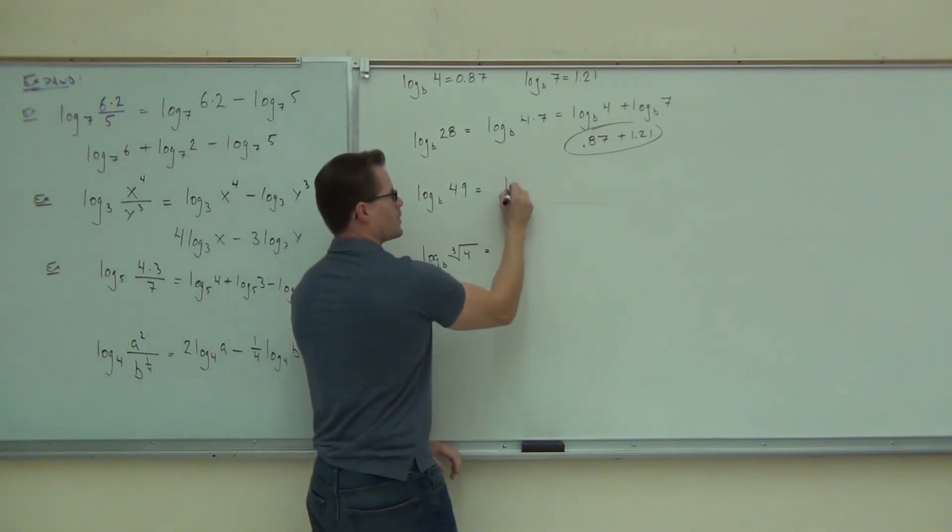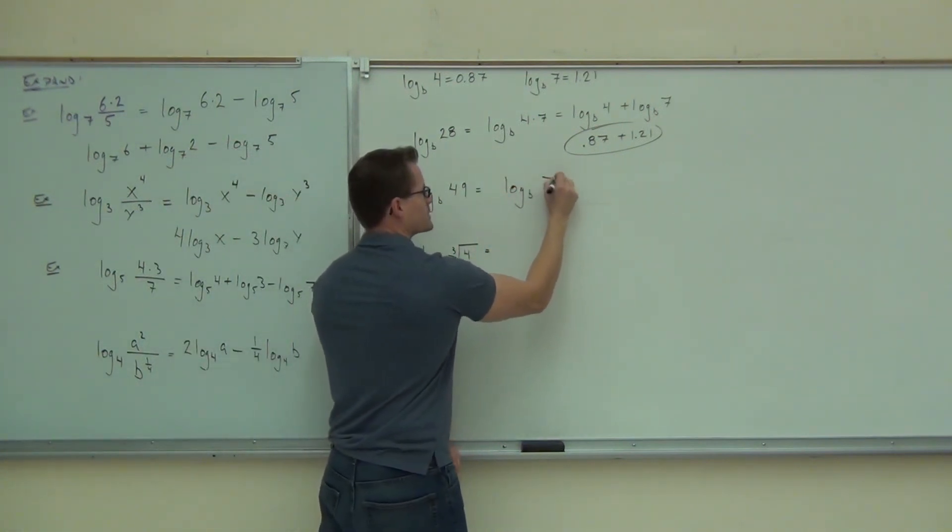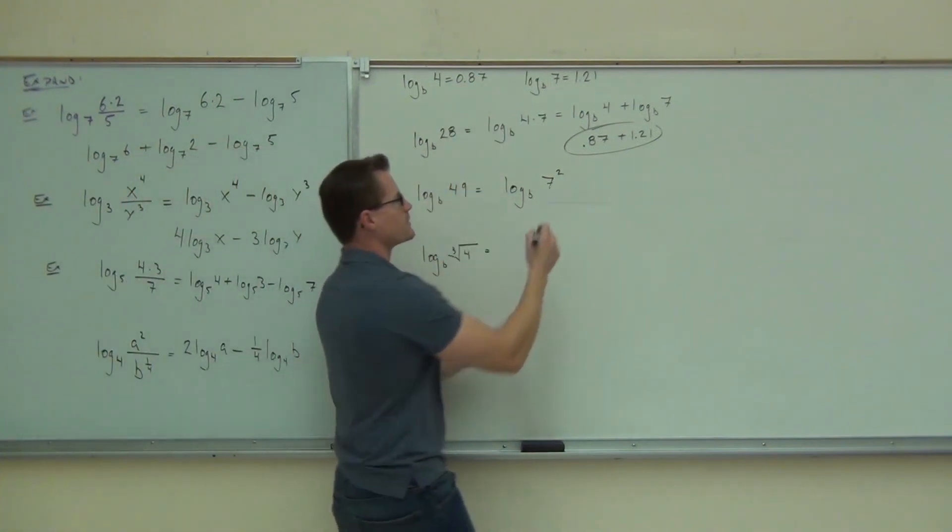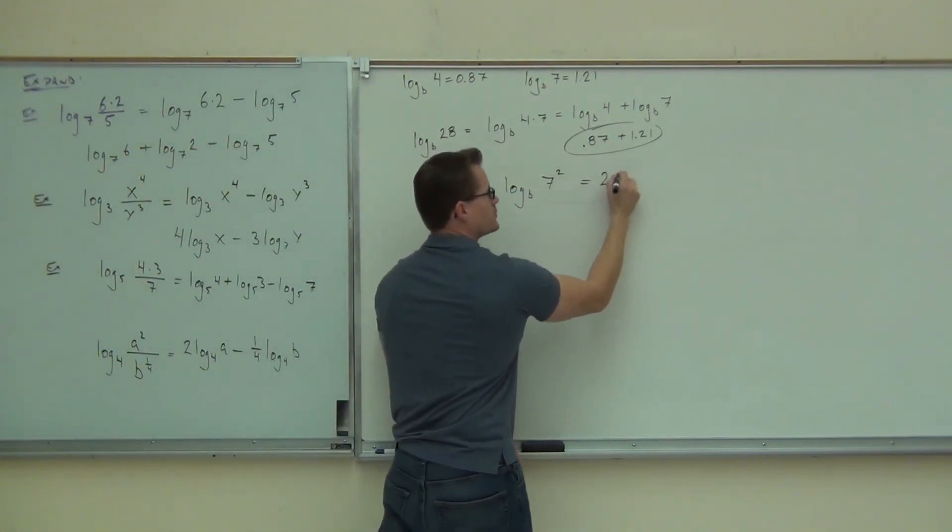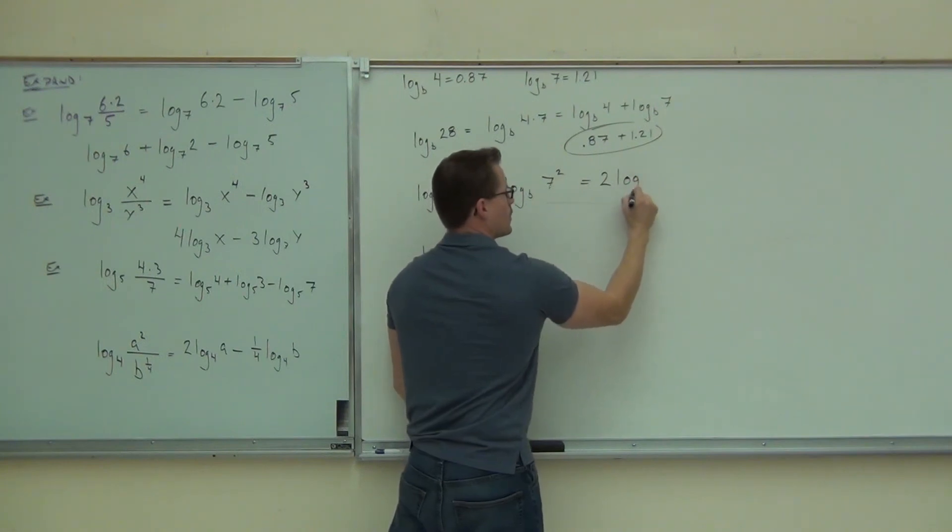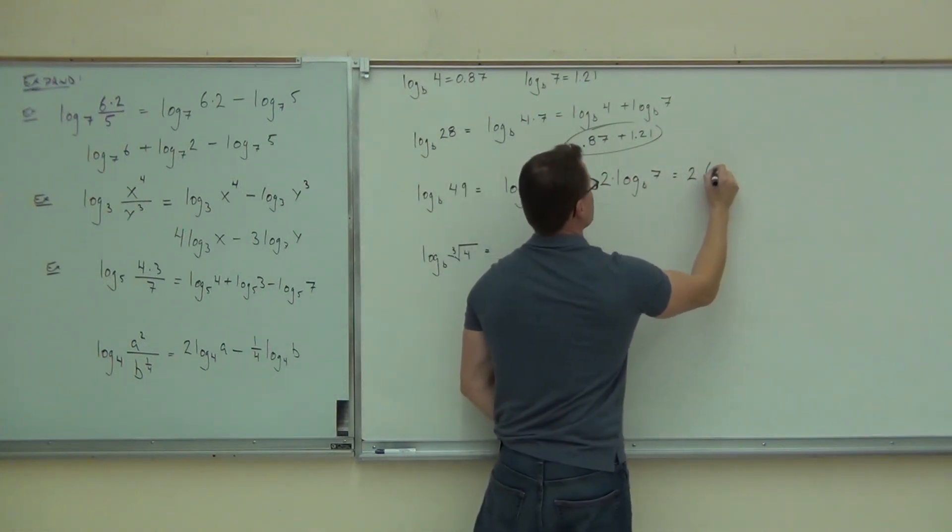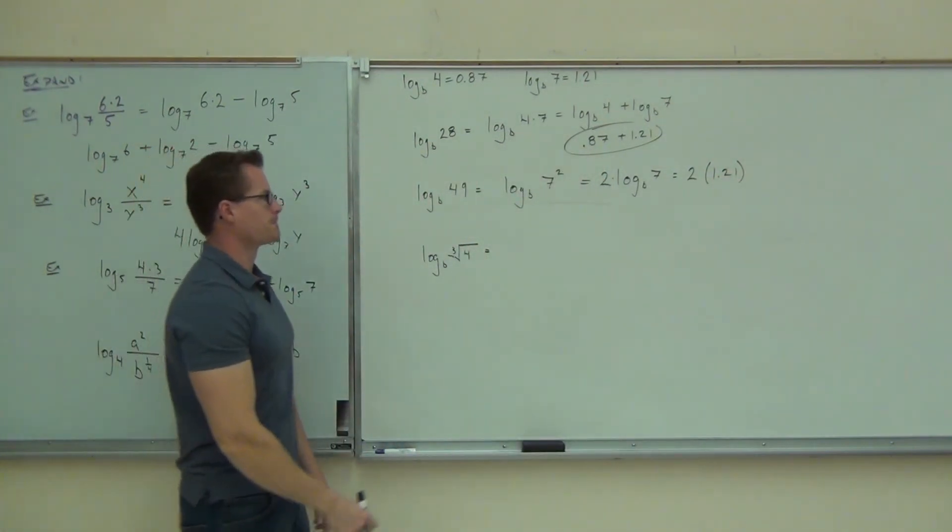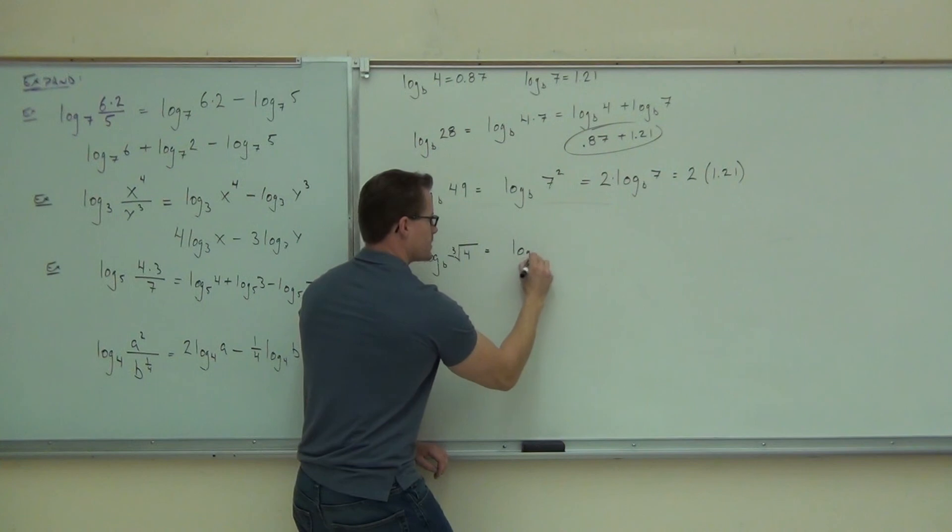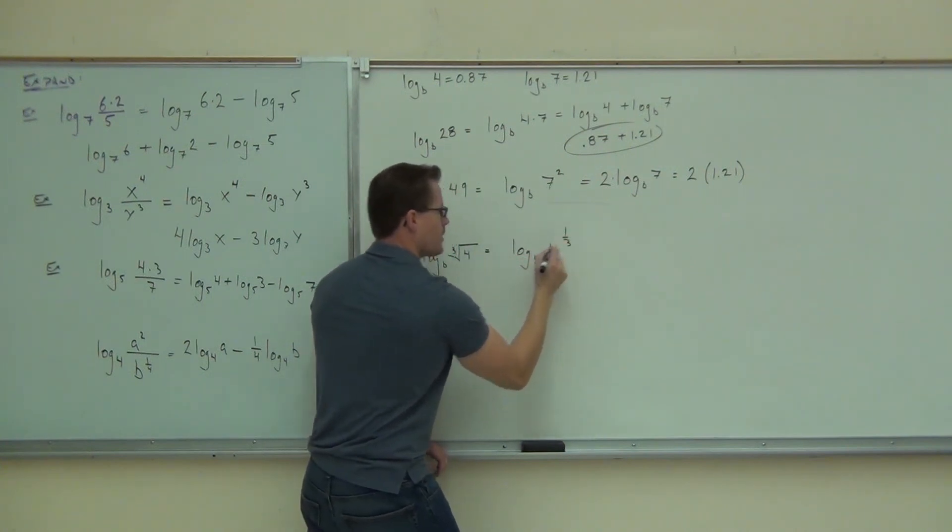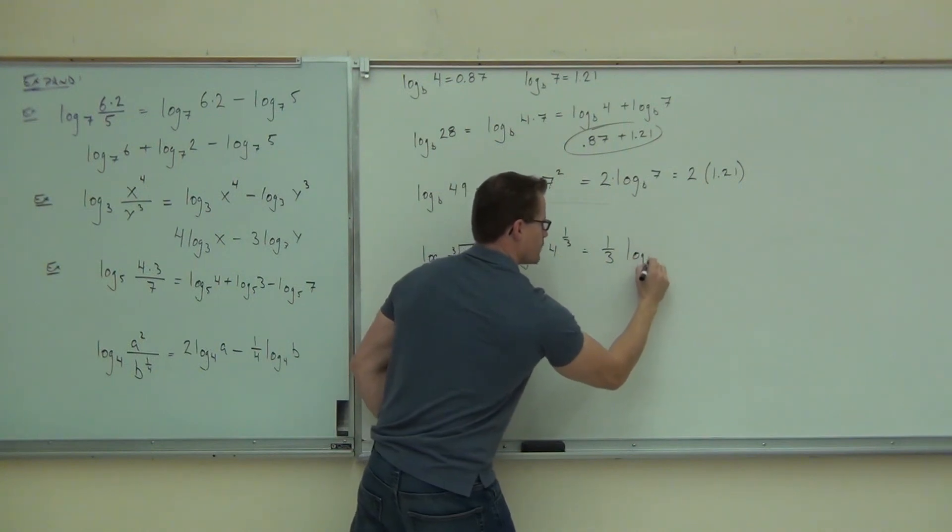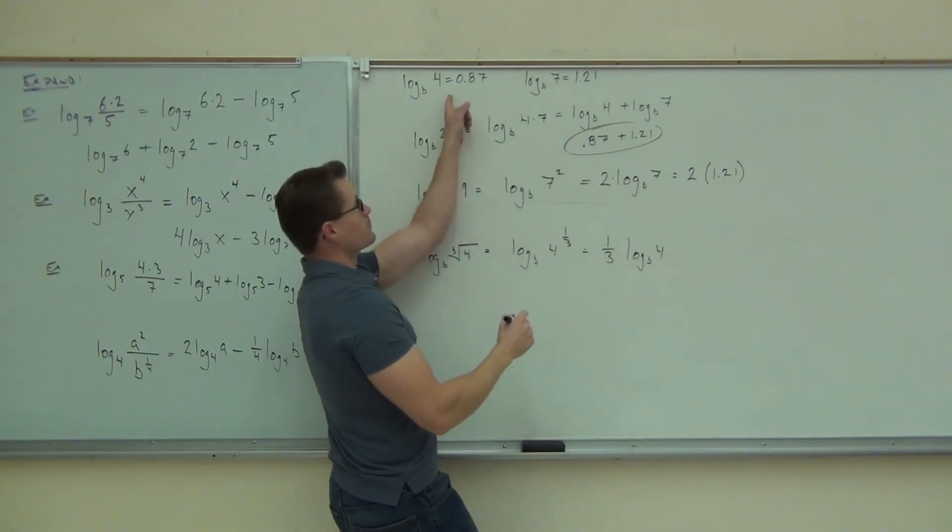Same thing for this one. This is log base B of 7 squared. Write 49 is 7 squared. Write them as one of these things. That's an exponent. It can move to the front. 2 log base B of 7. That would be 2 times 1.21. Last one. Log base B of 4 to the 1/3. That's an exponent. It can move to the front. 1/3 log base B of 4. Log base B of 4 is .87.